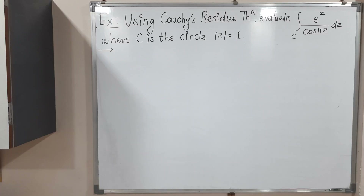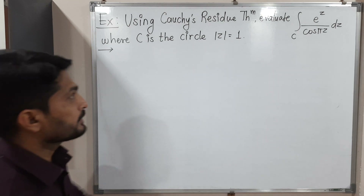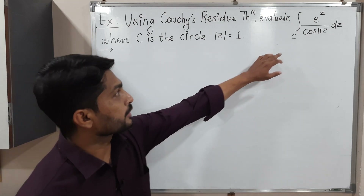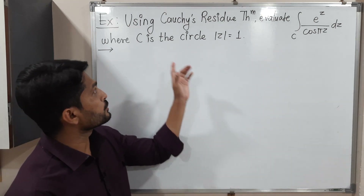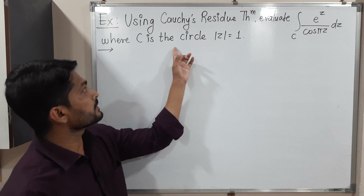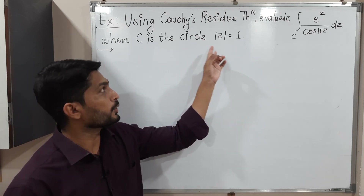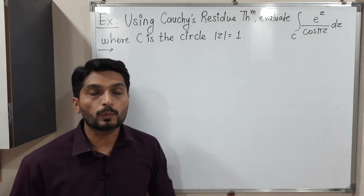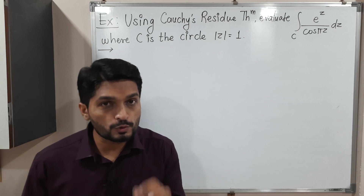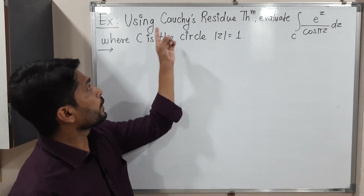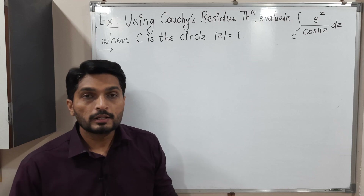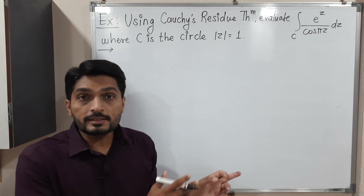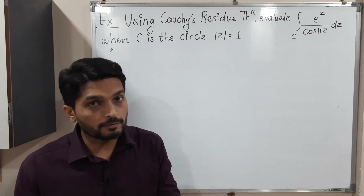Hi everyone. In this video we are going to discuss this example. We have this complex integration and we have to find its value. We have to solve this integration over curve C. C is a circle mod Z equals 1. They have mentioned we have to solve with the help of Cauchy's residue theorem. So let us consider that integral as I first.